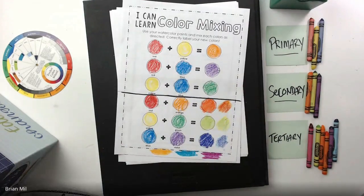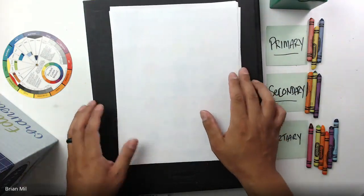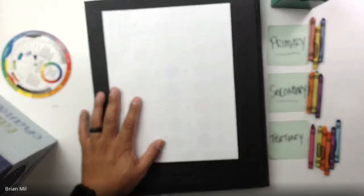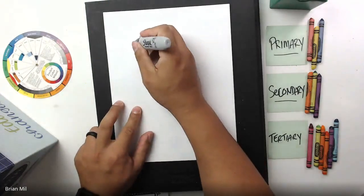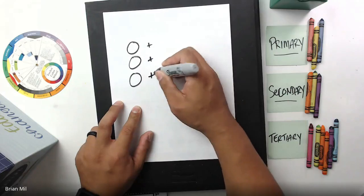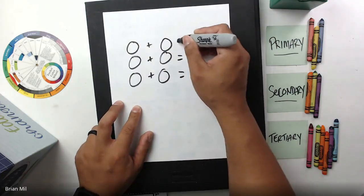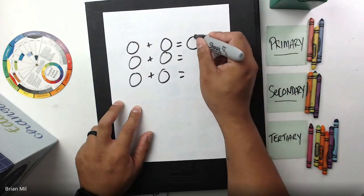Instead of using this worksheet, I'm going to be using a blank worksheet right here and we're basically going to mimic what that worksheet said. There were three circles, one two three, and they all had plus signs, and then another three, one two three, kind of like a math equation.